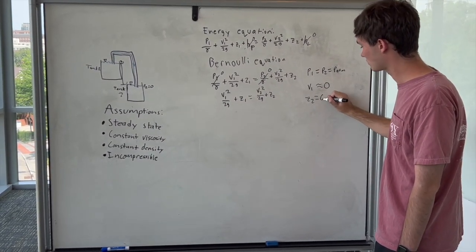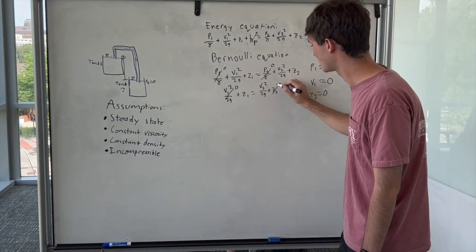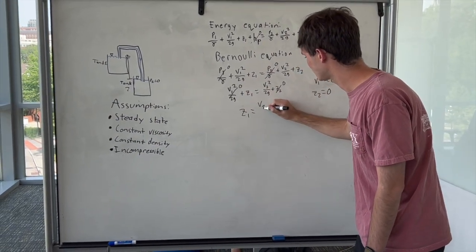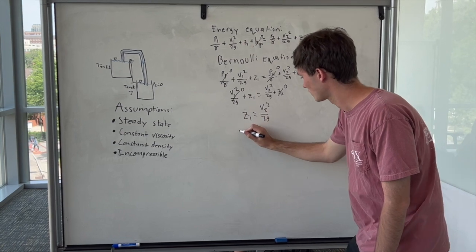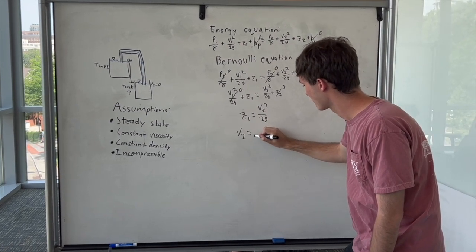which means that V1 is basically not moving, so the velocity is 0. We also set Z2 equal to 0, which gives us the following equation. Finally, solving that equation for V2 gives us V2 equals the square root of 2GH.